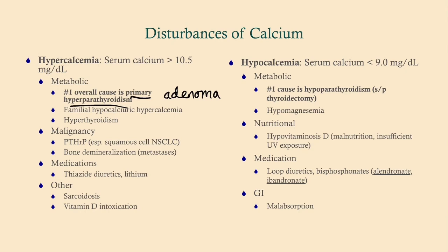Another cause is familial hypocalciuric hypercalcemia, where inappropriately low urinary calcium excretion leads to calcium buildup. Malignancy can cause hypercalcemia via PTHrP — a peptide that mimics PTH, secreted by a tumor; squamous cell lung cancer is the classic cause, though breast cancer can also do this. Hypercalcemia of malignancy can also result from bone metastases or multiple myeloma. Medications including thiazide diuretics and lithium are two important causes.